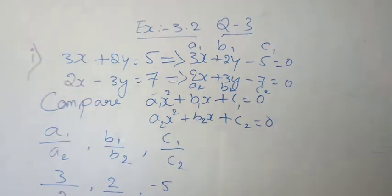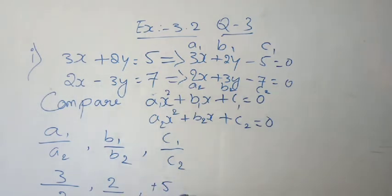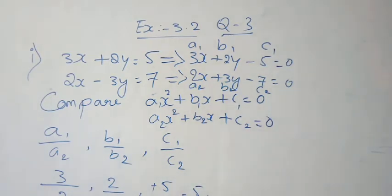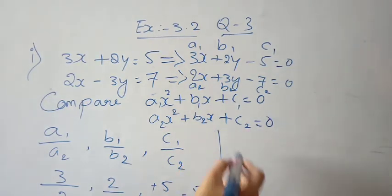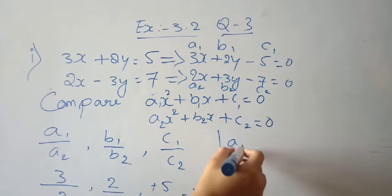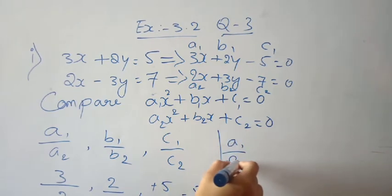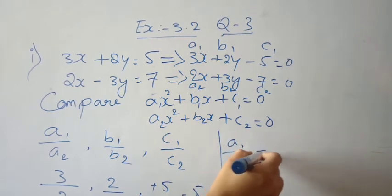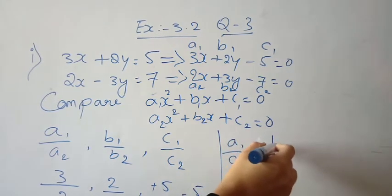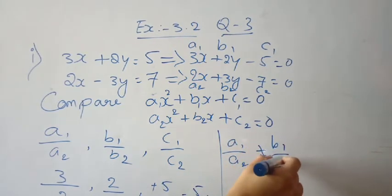So we get three values: first one is 3 by 2, second one is 2 by 3, and next one is 5 by 7. None of these are equal to each other. Therefore, a1/a2 is not equal to b1/b2.